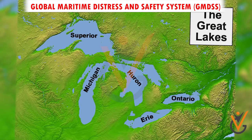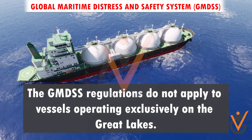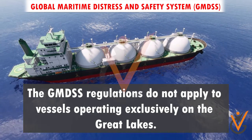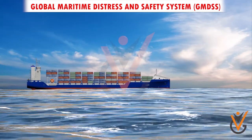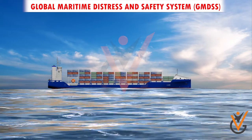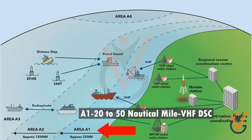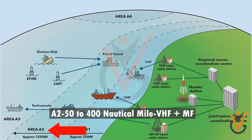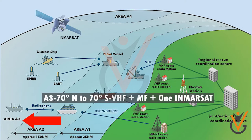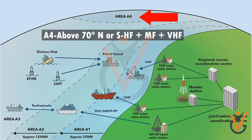Vessels on the Great Lakes: the GMDSS regulations do not apply to vessels operating exclusively on the Great Lakes. In the GMDSS framework, there are different sea areas to allot the working equipment in the respective area. A1: 20–50 nautical miles, VHF DSC. A2: 50–400 nautical miles, VHF plus MF. A3: 70 degrees north to 70 degrees south, VHF plus MF plus Inmarsat. A4: above 70 degrees north or south, HF plus MF plus VHF.